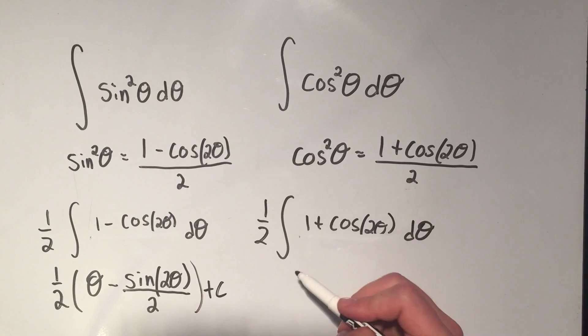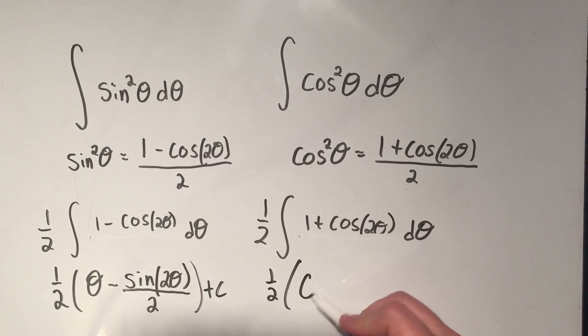Over here, very similar. I'm going to have a 1 half. The antiderivative of 1 is theta plus the antiderivative of cosine 2 theta is sine 2 theta over 2 plus c.